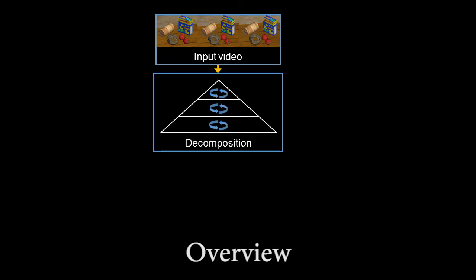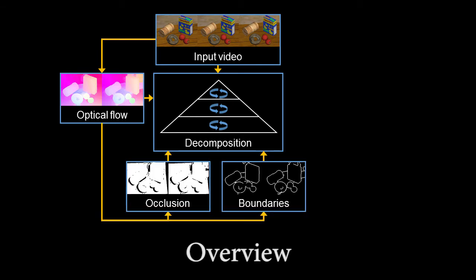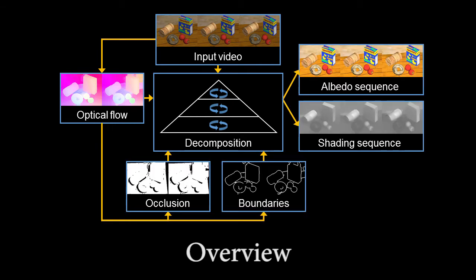The input is a video sequence. We optimize an objective function that integrates temporal coherence information from the optical flow, as well as occlusion and motion boundaries extracted from the flow. The output is temporally coherent sequences of albedo and shading.